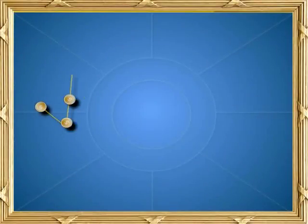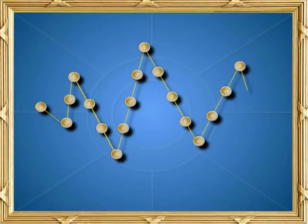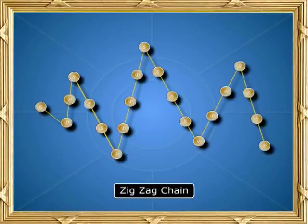Look closely at the molecular structure of plastic sulphur. It has a long open coil or zigzag chain.